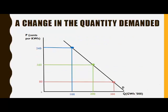Here we have a demand curve. It shows the price of electricity on the vertical axis and the quantity of electricity demanded on the horizontal axis. When the price of electricity increases from 80 to 160 cents, the quantity demanded decreases from 300 to 200 gigawatt power.